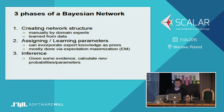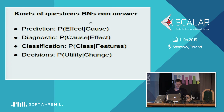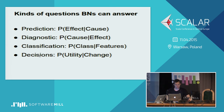What kinds of questions can Bayesian networks answer? First, prediction: given that I know the causes, what is the probability of an effect? Second, diagnostics: the reverse — I observe the effects or symptoms and reason about what the causes were. Third, classification: assigning class probabilities to data rows given their features. Fourth, decision making: estimating the probability of a certain utility or cost function given a change you might make, for example to a sales process.